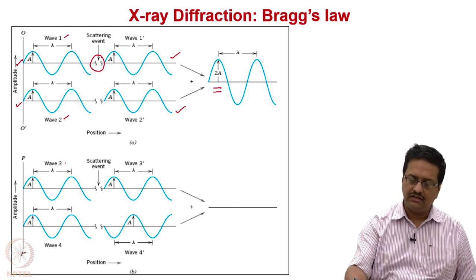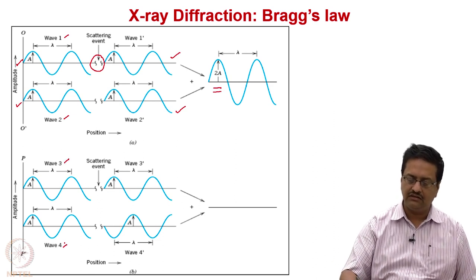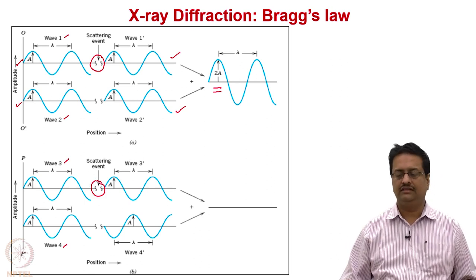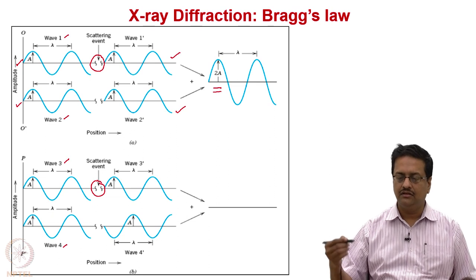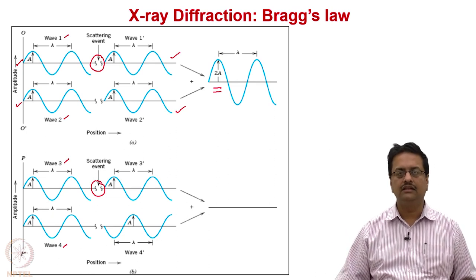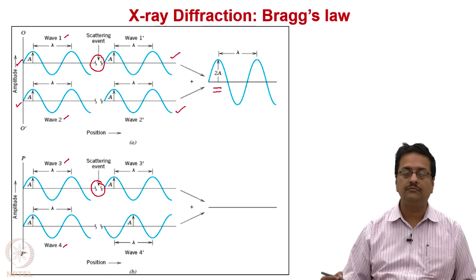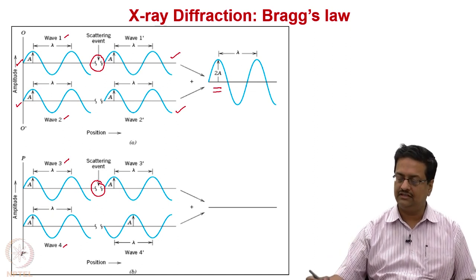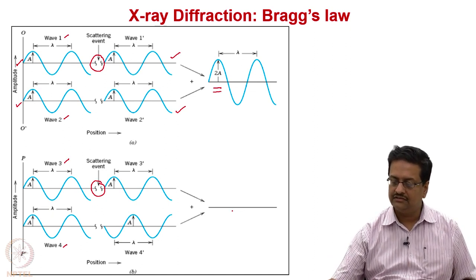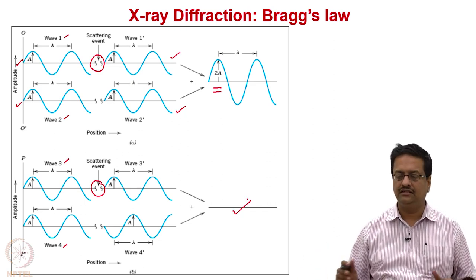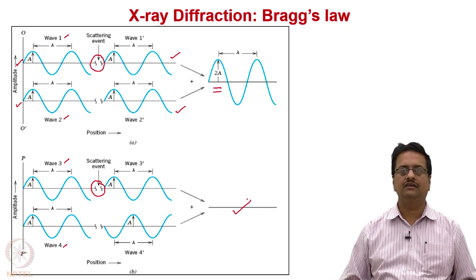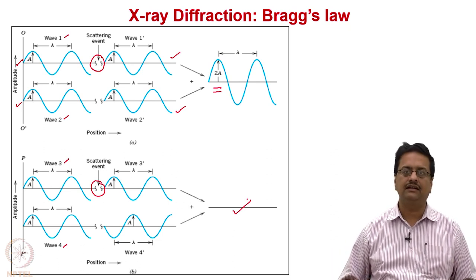On the other hand, when two waves — wave 3 and wave 4 — undergo a scattering event through a crystal and they come out offset, they do not combine together to give a diffraction signal. The interference is out of phase and hence we do not see any diffracted beam.